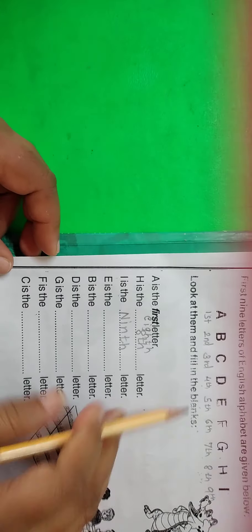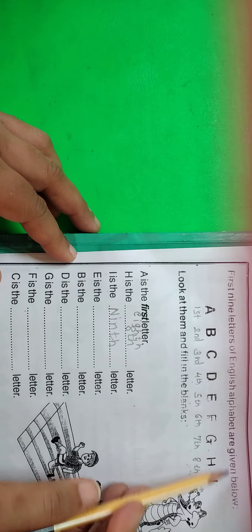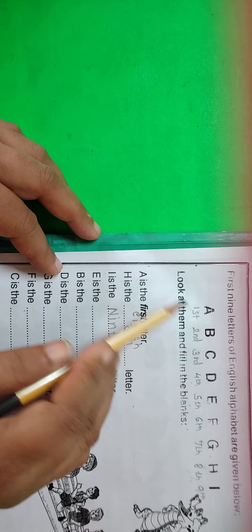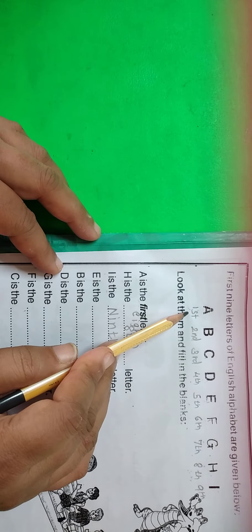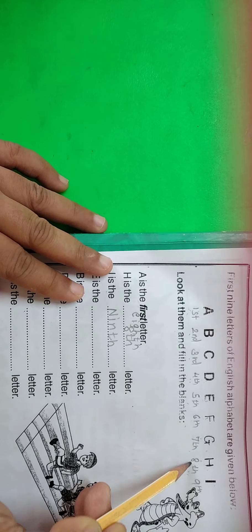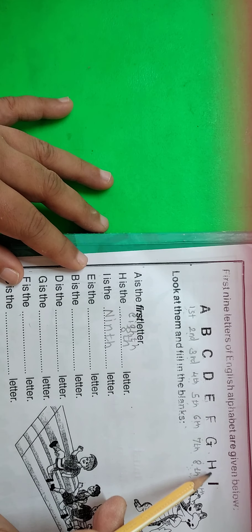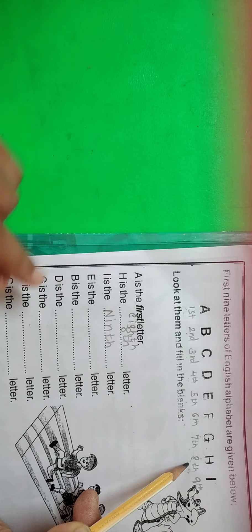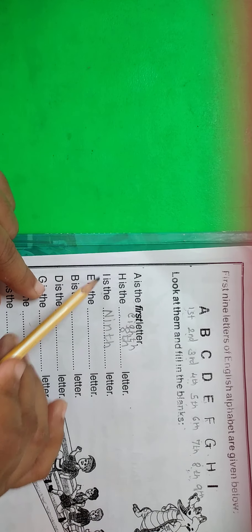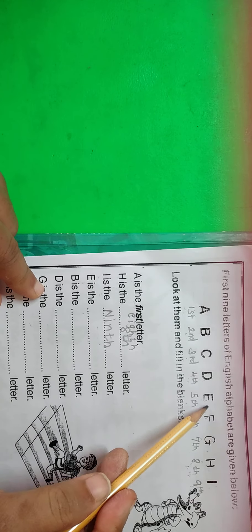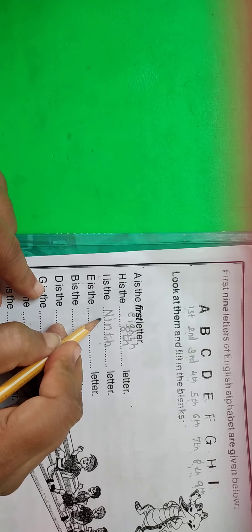Now turn the page. See here, you just solve this. The 1st 9 letters of the English alphabet are given: A, B, C, D, E, F, G, H, I. First you write down the ordinal form: 1st, 2nd, 3rd, 4th, 5th, 6th, 7th, 8th, 9th. Then read the questions. H is the dash letter — H is the 8th letter, write the spelling of eighth. A is the dash letter — write the number name for 9th. E is the dash letter — E is the 5th letter, write the spelling of fifth: F-I-F-T-H. Like that only you solve this.